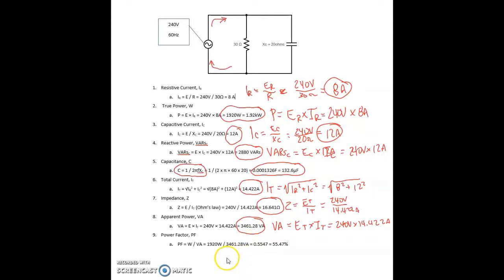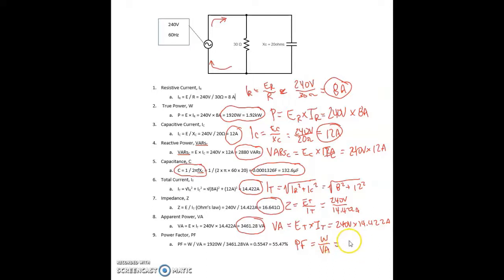And for power factor, we're using the same formula: power factor equals true power in watts over apparent power in volt-amps. Power factor equals 1,920 watts divided by 3,461.28 volt-amps, which equals 0.5547. Power factor is typically given as a percentage, so that's 55.47%.